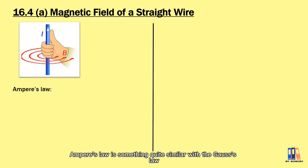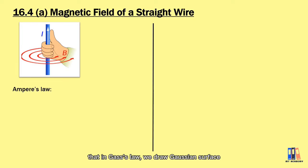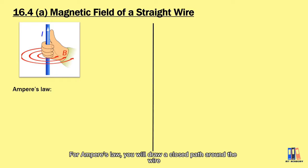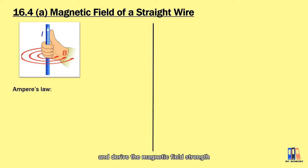Ampere's Law is something quite similar to Gauss's Law. In Gauss's Law, we draw a Gaussian surface and identify the electric field strength. For Ampere's Law, we draw a closed path around the wire and derive the magnetic field strength produced by the current flowing in the wire.